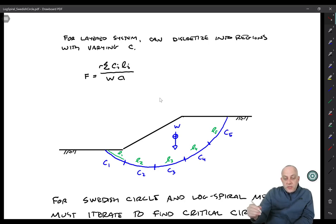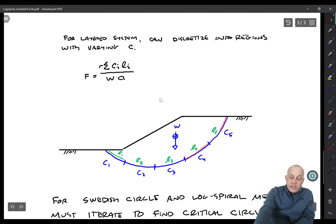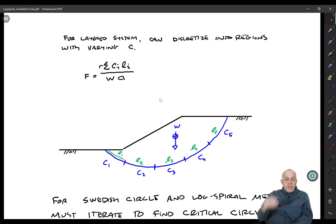And then for layered systems, it's pretty easy to handle this. You just subdivide the circle into regions and you do a summation over the cohesion and the sub arc length for each of those little regions. So you might want to do this if you have a layered system where the circle is going through multiple layers, or maybe if the undrained strength is varying more continuously with depth within a single layer.